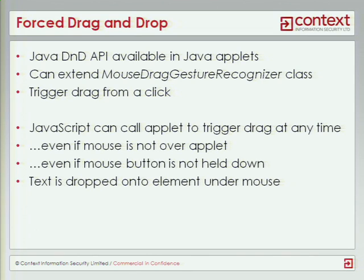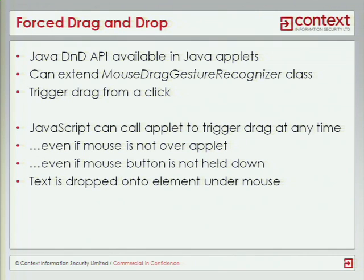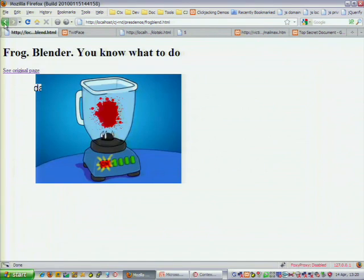We can actually go even further with the Java drag-and-drop API. We can say, instead of requiring the user to do anything with the Java applet, actually just start a drag-and-drop event right now. So JavaScript on a malicious web page could use a hidden Java applet to force the user to enter text into form fields. The way this works is the web page would say, start a drag-and-drop with this text, and wherever the user's mouse cursor is, the text will be dropped onto that area — so if it's over a text field inside a hidden iframe, the text will be entered into there.